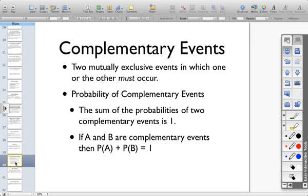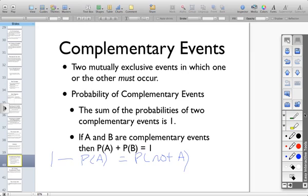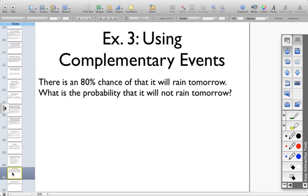If you know the probability of something, then you can add them together. Let's say I know the probability of A, and I want to figure out the probability of not A. Well, one minus the probability of A would be the probability of not A. Let's take a look at an example. There's an 80% chance that it's going to rain tomorrow. What's the probability that it won't rain tomorrow? It's either going to rain, or it's not going to rain.